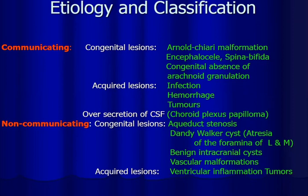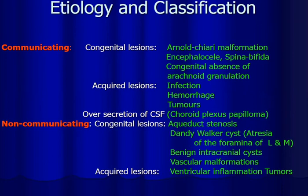Non-communicating hydrocephalus can be due to congenital lesions, most commonly aqueduct stenosis, or a condition called Dandy-Walker syndrome where there is atresia of the foramina of Luschka and Magendie — the foramina for CSF to escape from the fourth ventricle to the subarachnoid space. It can also be due to benign intracranial cysts or vascular malformations. Acquired causes include ventricular inflammation or tumors.